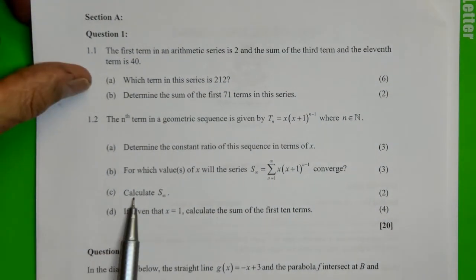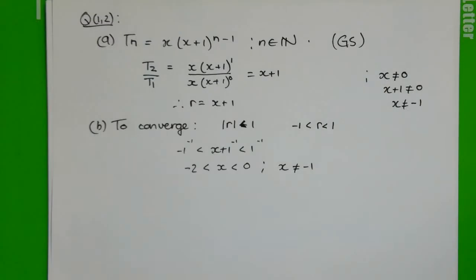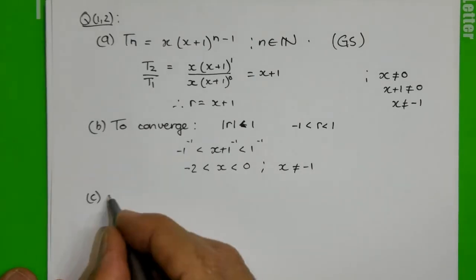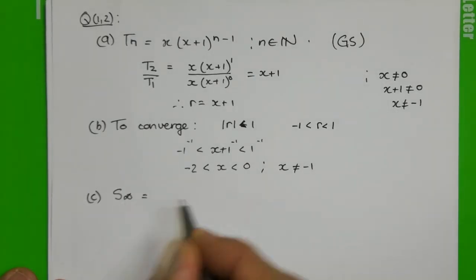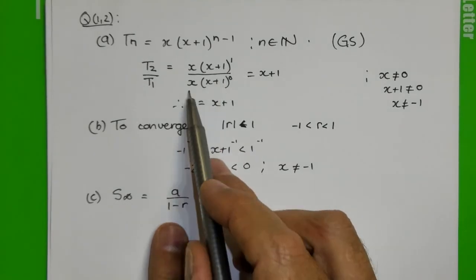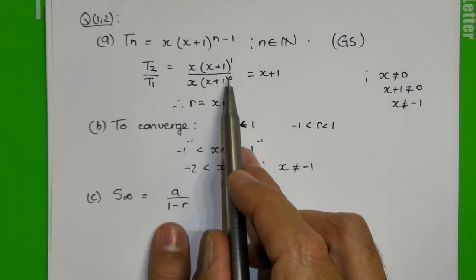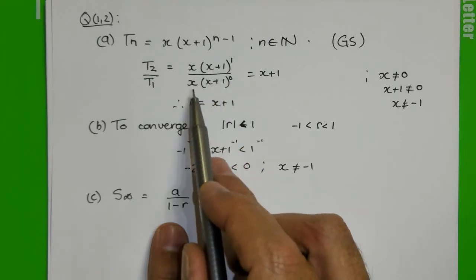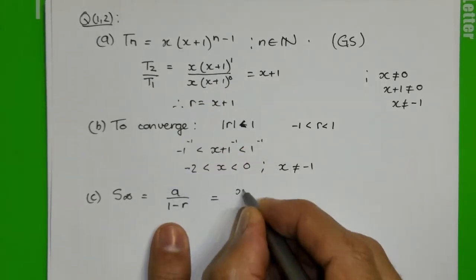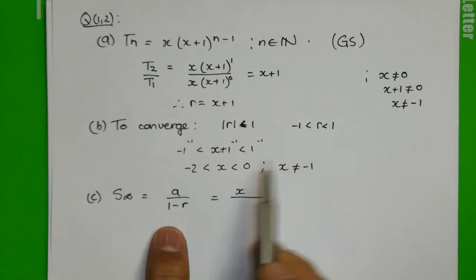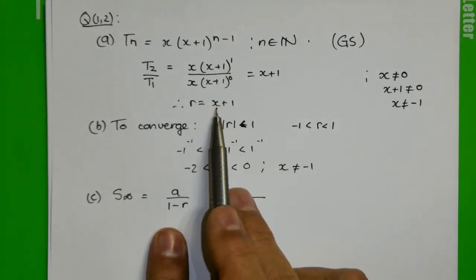The next question asks us to find the sum to infinity. Now remember, for your sum to infinity to exist, the sequence has to converge. So the sum to infinity formula, a over 1 minus r. Now we need the first term. And we found the first term over here. This bracket reduced to x to the 0, which is 1. And we were left with an x. So term 1 is x. And our constant ratio we found to be x plus 1.